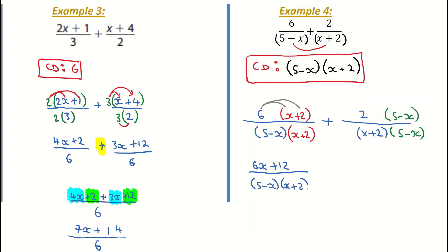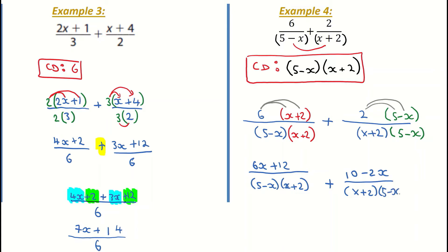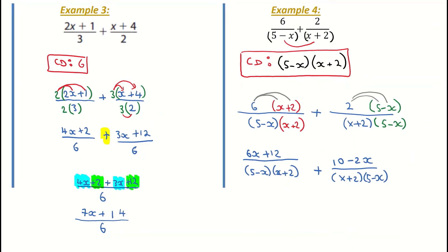That's the first fraction. I bring down my plus sign — I'm adding my two fractions. When I multiply the top of the second fraction, it's 2 multiplied by 5 and 2 multiplied by minus x, which gives me 10 minus 2x, all over my common denominator (x plus 2)(5 minus x). It doesn't matter that the order of the common denominator is different. I now write it as a single fraction, putting the tops together: 6x plus 12 plus 10 minus 2x, all over (5 minus x)(x plus 2).